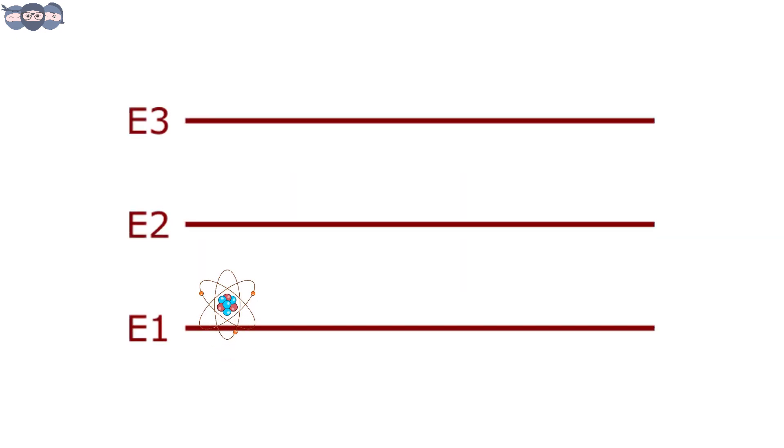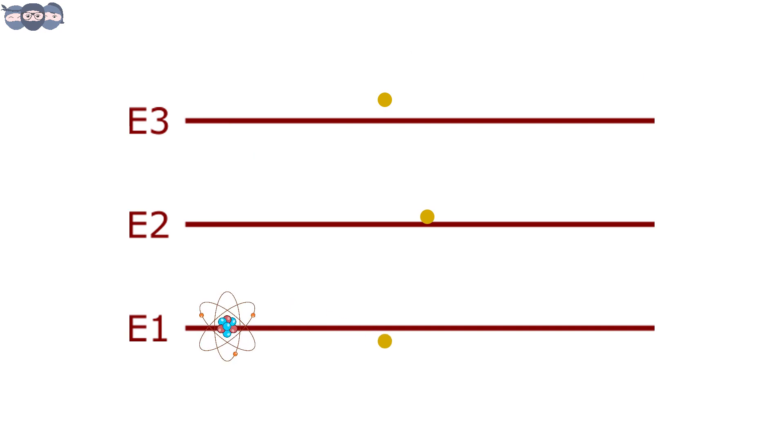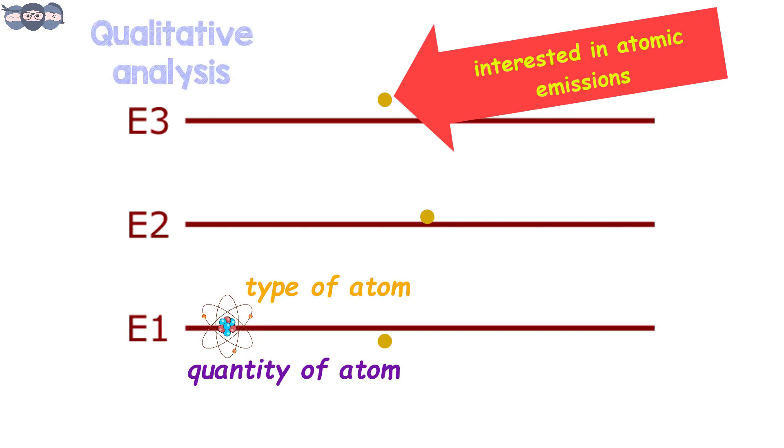This phenomenon works by exciting an atom to a higher energy level and studying the energy emitted by that atom when it falls back to its initial energy level. So basically, we are interested in the emissions given out by the atoms. By studying the emissions, the user can identify the type of atoms as well as its quantity. This means that the user can perform both qualitative and quantitative analysis on the sample.